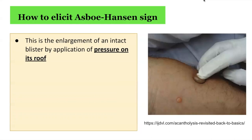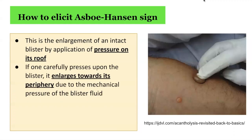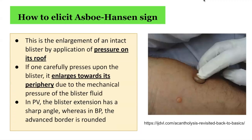As per the diagram on the right hand side, if one carefully presses upon the blister, it will enlarge towards its periphery due to the mechanical pressure of the blister fluid. In intraepidermal processes such as pemphigus vulgaris, the blister extension has a sharp angle. In contrast, in subepidermal processes such as bullous pemphigoid, the advancing border is more rounded, as shown here in this picture.